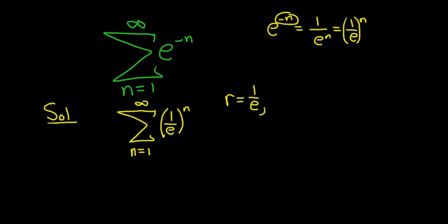And we know that the geometric series test says that the series will converge if the absolute value of r is less than 1. Otherwise, it's going to diverge.